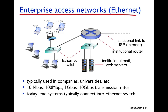Enterprise access networks, typically using Ethernet, are used by companies or universities. For example, a university is connected to the internet via a gateway router. Inside the institution, there are routers and switches interconnected in a LAN. Ethernet can support 10 Mbps, 100 Mbps, 1 Gbps, or 10 Gbps. All users connect to the internet through this institutional link.